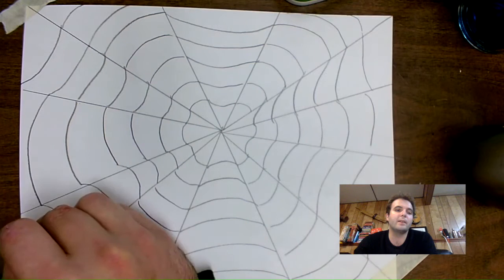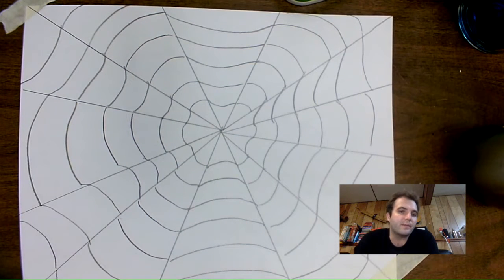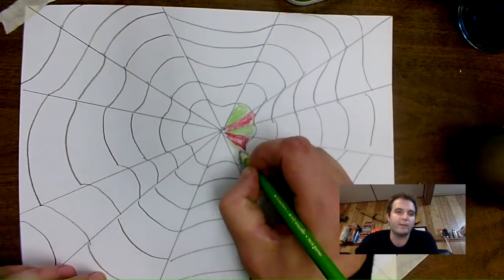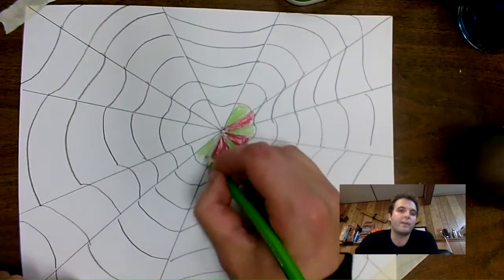Alright, almost done there. Now we're going to pick two colors. I'm going to pick red and green. And you're going to start by coloring the middle and alternate between red and green, red and green, red and green, all the way around there.